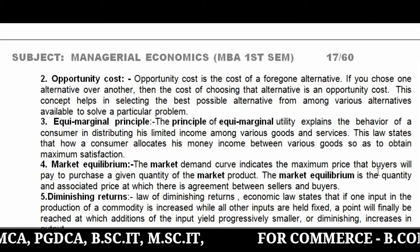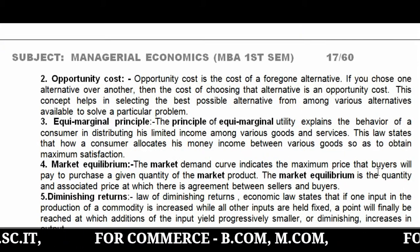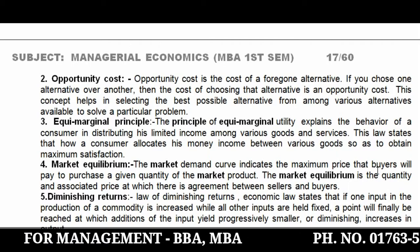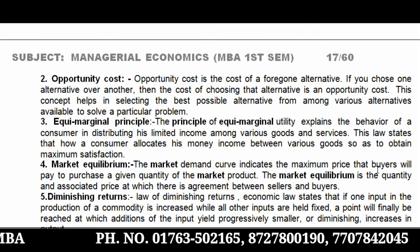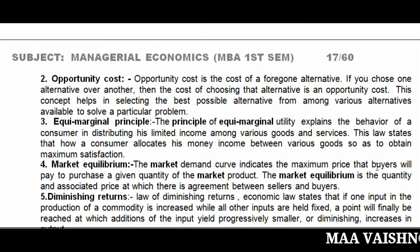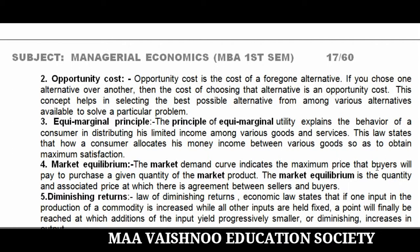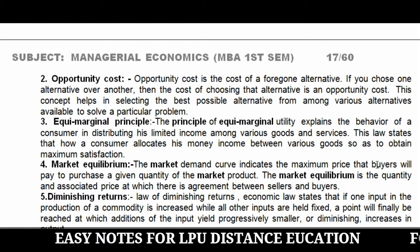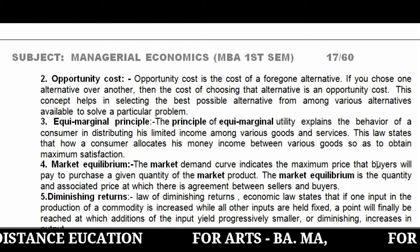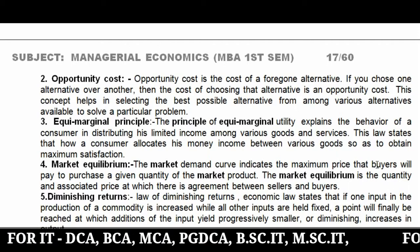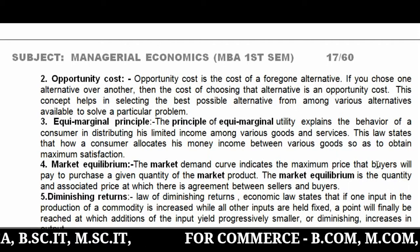The next point is Opportunity Cost. If we have two alternatives and we choose one, the opportunity cost is the cost of choosing that alternative over the other — it means we have foregone the first alternative. The cost of the foregone alternative is the opportunity cost of the chosen one. Through this concept, among all available alternatives in business, we can choose the best possible alternative to solve a particular problem.